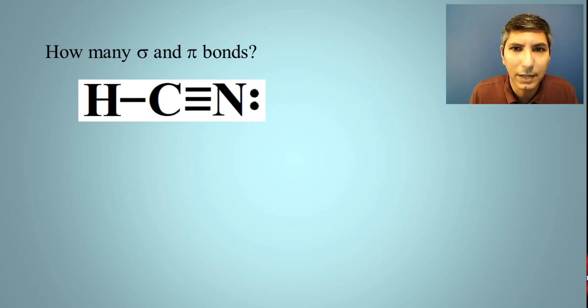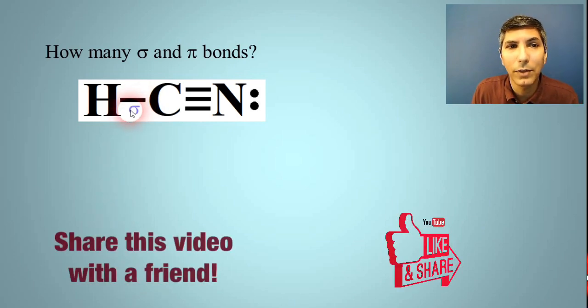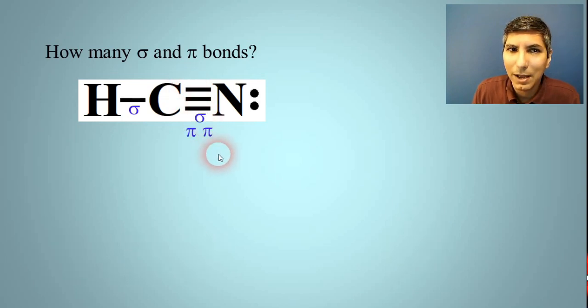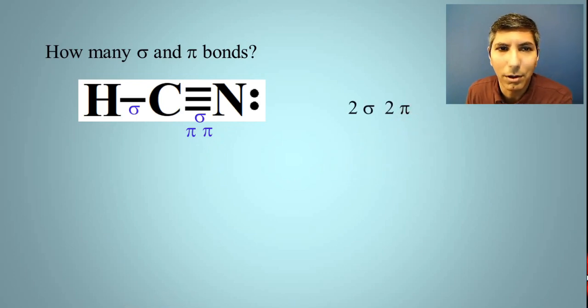Now, we're going to try a couple examples of this. Let's take a look at HCN, and we're going to figure out how many sigma bonds and pi bonds there are here. Well, hopefully you see that there's a single bond, so that's a sigma. And then there's a triple bond, which is one sigma and two pi. So, when you add it up, it's two sigma and two pi bonds.